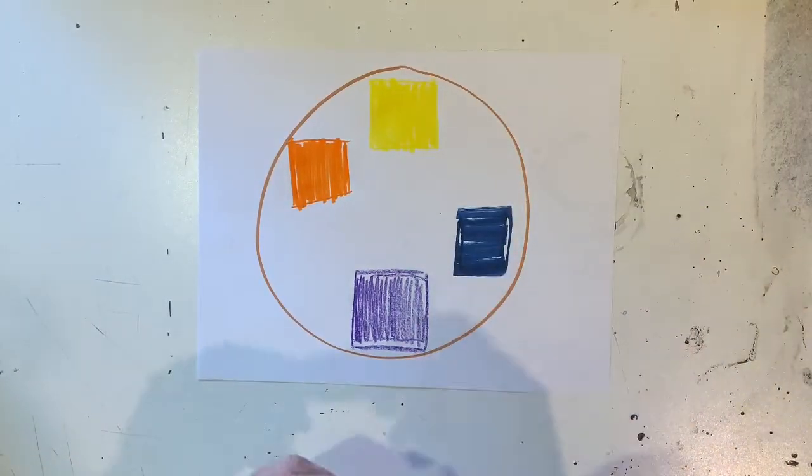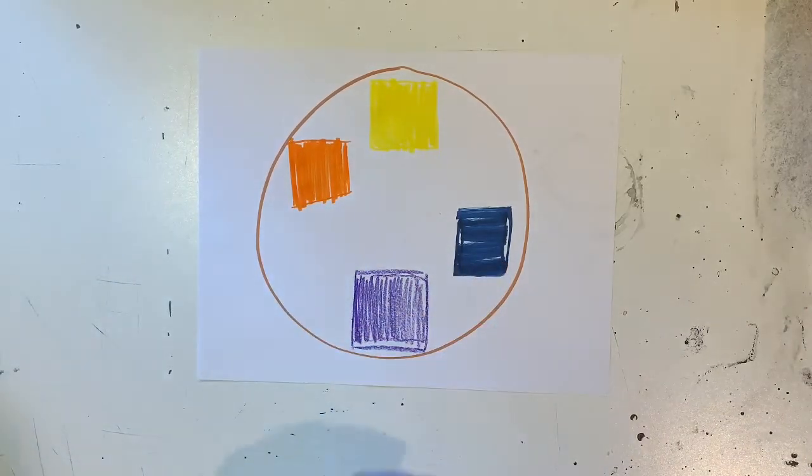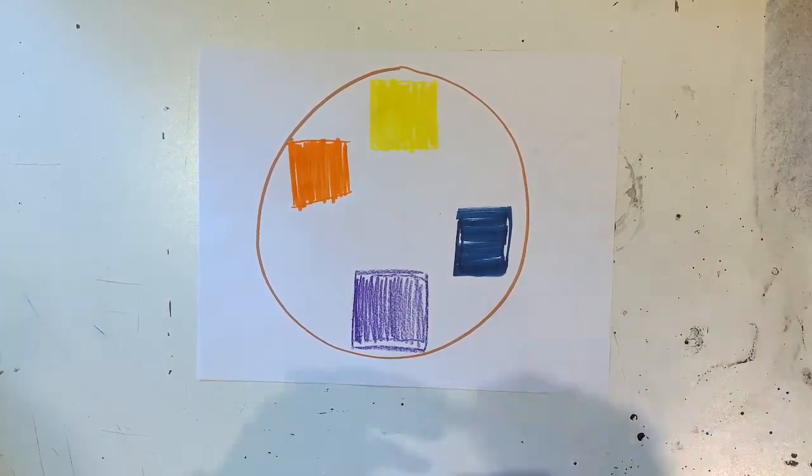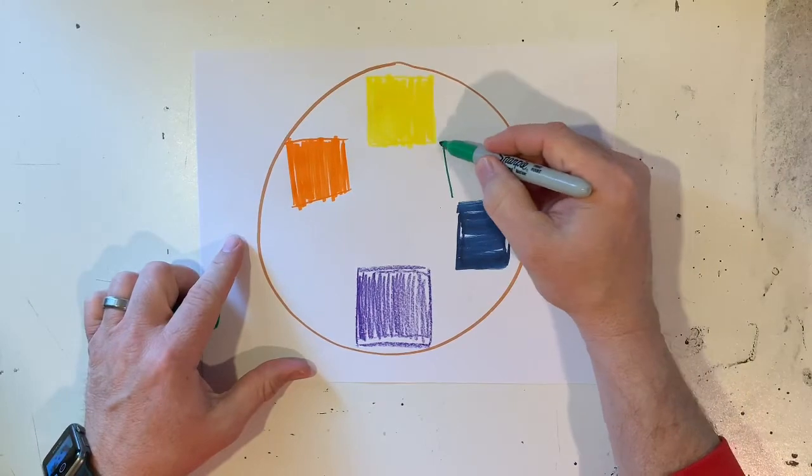So I got yellow across from purple, I got orange across from blue. The last ones I'm going to have to do are red and green. So right here, next to my yellow blue, I'm going to squeeze in a green square.